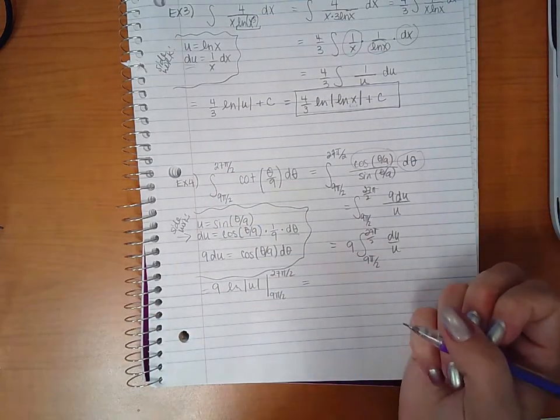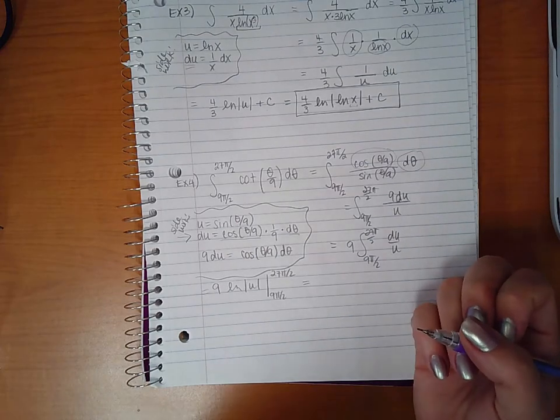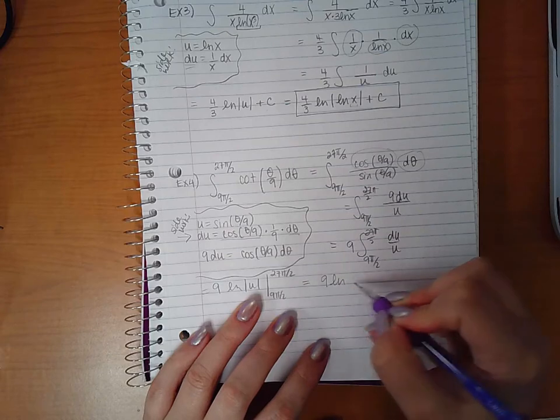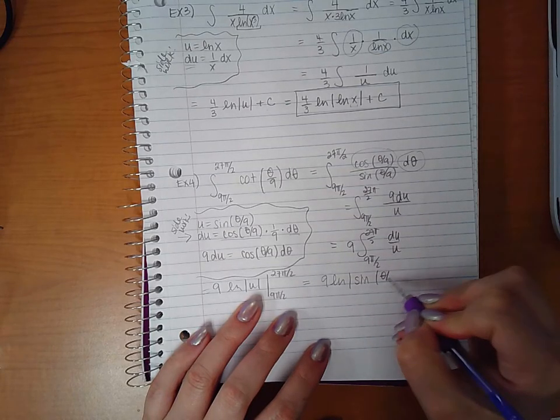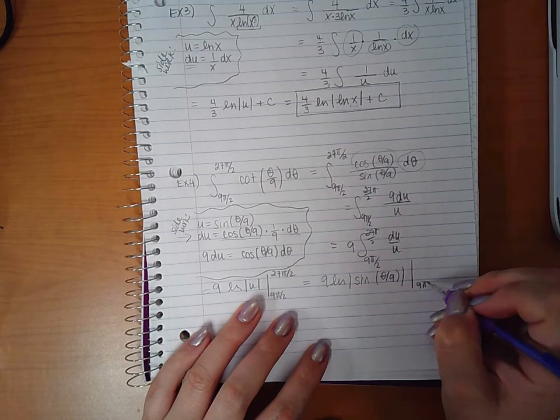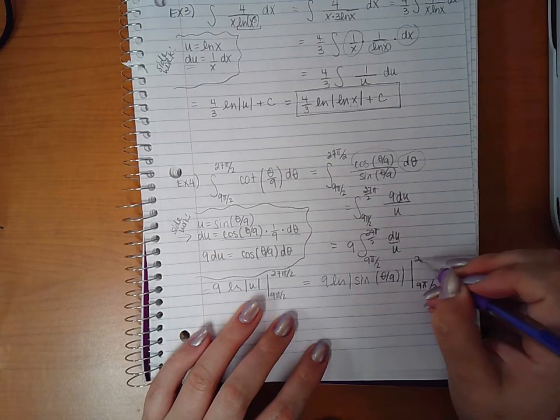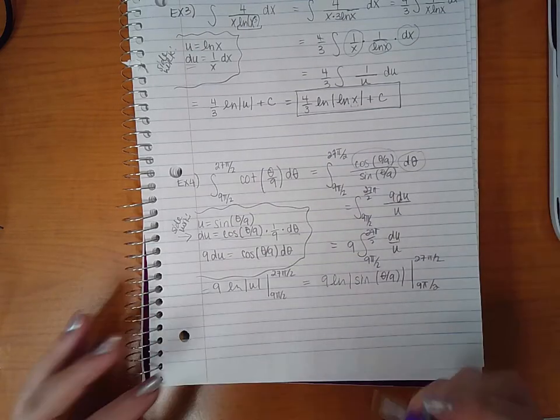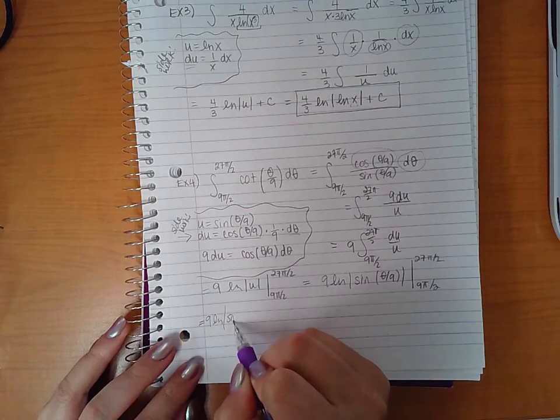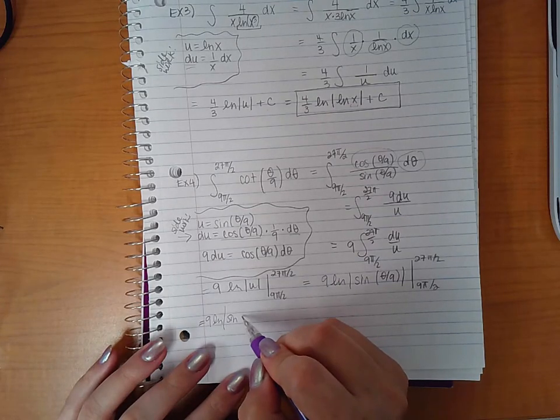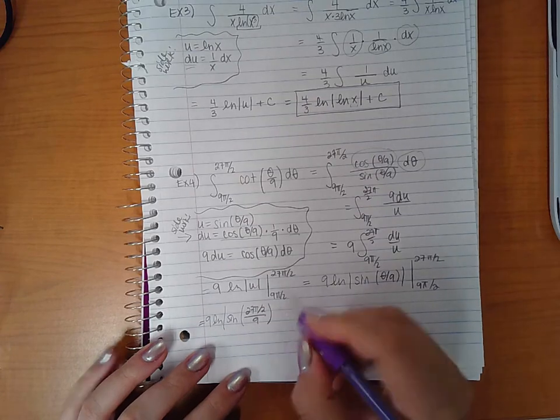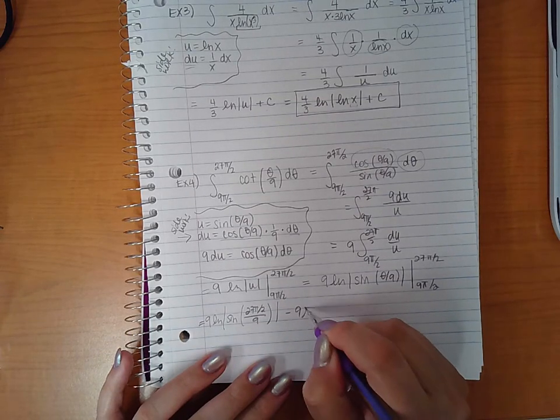So we have to finish the whole integration process before we can do the evaluation part. u is actually sine of theta over 9. Now that I'm completely finished with all of the integration part, I can substitute. So we get 9 ln the sine of 27 pi over 2 over 9 minus 9 ln of sine of pi over 2 over 9.